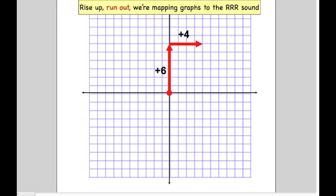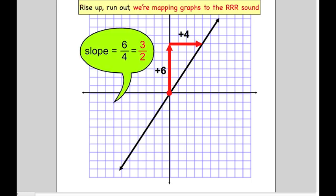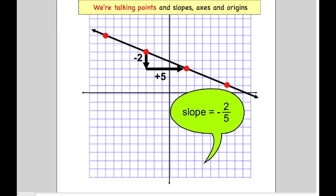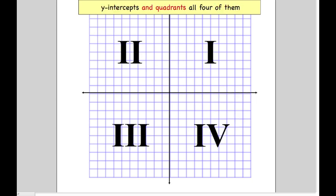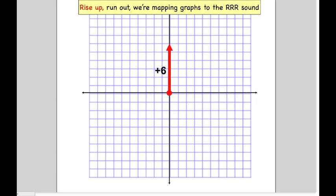Rise up, run out, we mapping graphs to the triple R sound. We talking points and slopes, axes and origins, Y intercepts and quadrants all four of them.